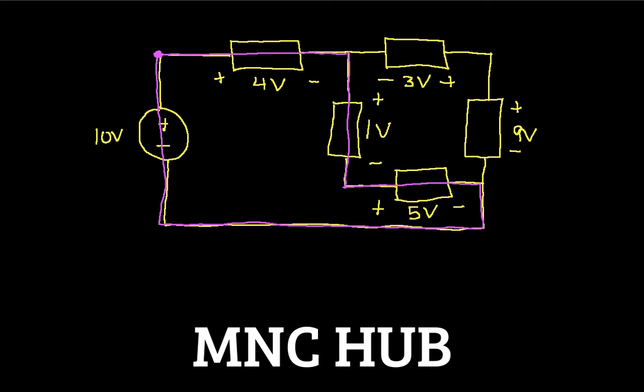If I encounter a voltage going from a higher potential to a lower potential, as I would here, I write it down as a positive voltage. So the first voltage I encounter is 4 volts. Now I turn the corner and encounter the 1 volt drop. Again, I'm going from a higher to lower potential, so that's 1 volt.